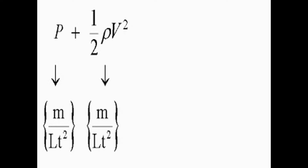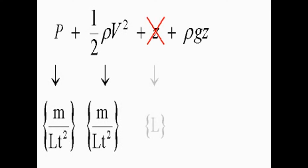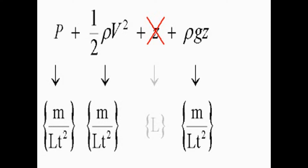Consider Bernoulli's equation, for example. Static pressure p is a force per unit area with dimensions of mass over length times time squared. The dynamic pressure, one-half rho v squared, has to have the same dimensions. Adding the hydrostatic head z doesn't work because it isn't dimensionally consistent. However, we can instead express the head as a pressure, rho gz, and now it is consistent.